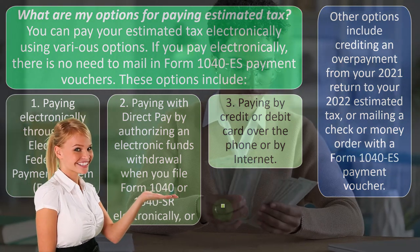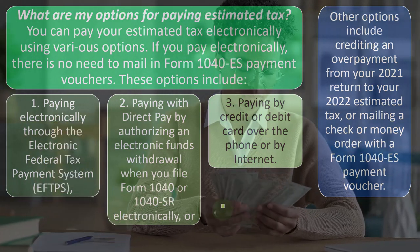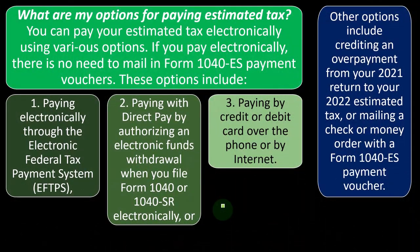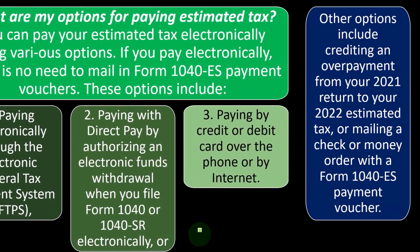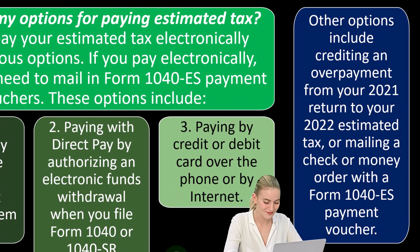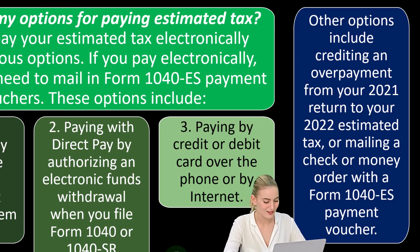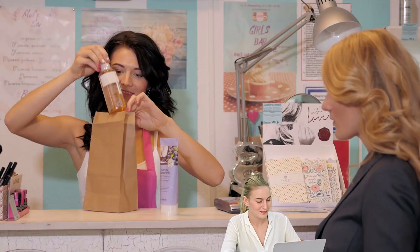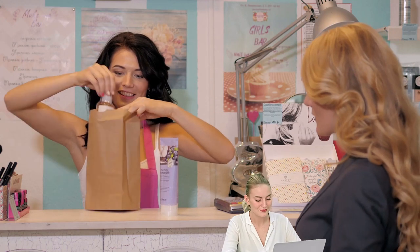Find your electronic payment options if you can connect to your bank. You can also go to your account at irs.gov and pay pretty easily. Another option includes crediting an overpayment from your 2021 return to your 2022 return. Note that estimated payments become more and more important going forward.